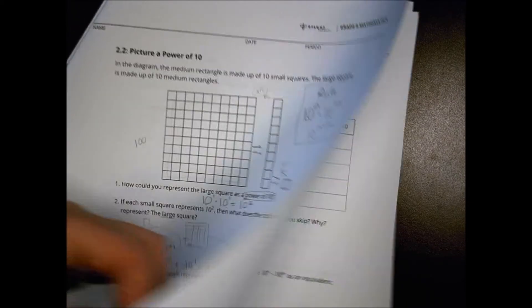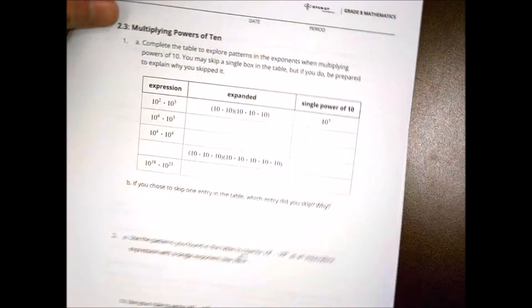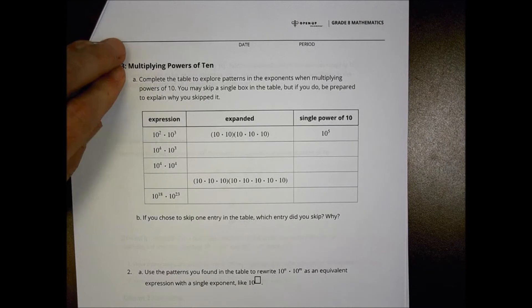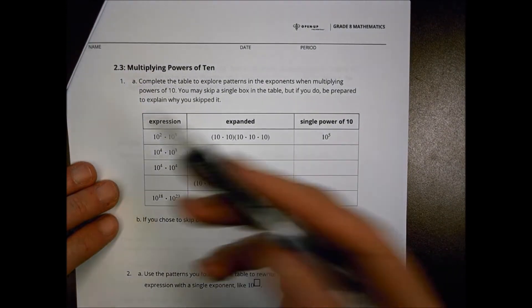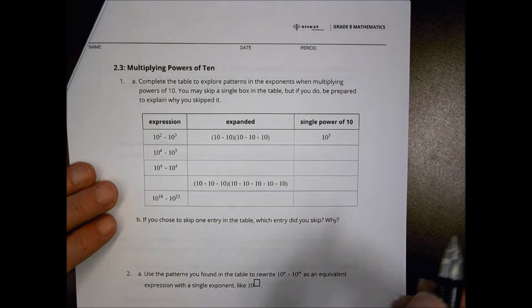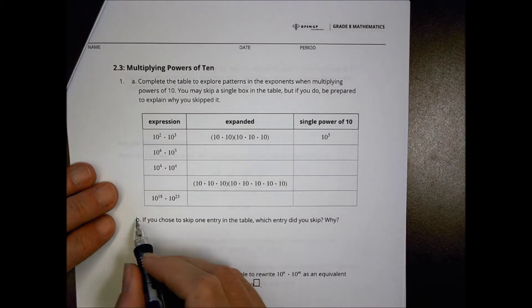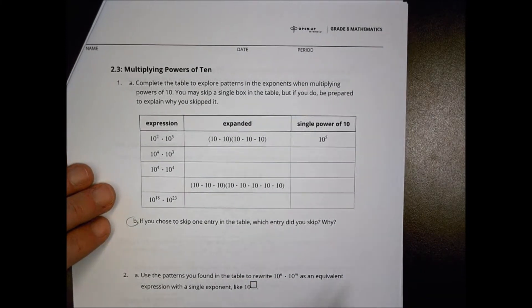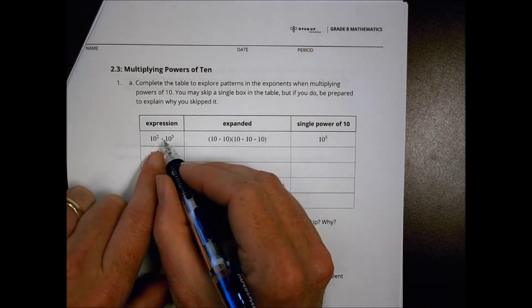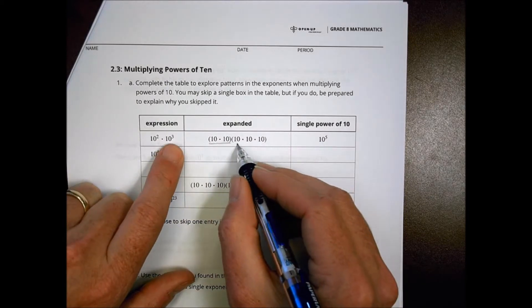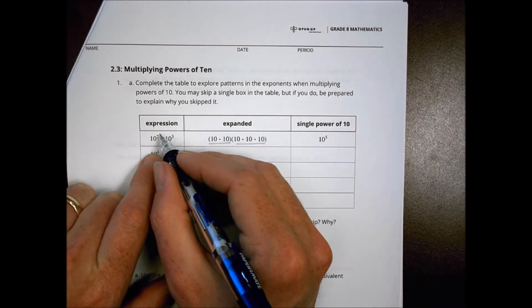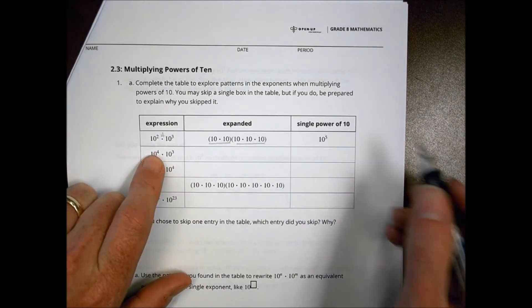Let's take a look at the third activity. It wants us to complete this table to explore the patterns and the exponents when multiplying powers of 10. You can skip a single box in the table, but if you do, be prepared to explain why you skipped it. Which one are you skipping? Why? So let's take a look here. The expression 10 squared times 10 to the third expanded out as two tens, three tens, combining two plus three gets you five.